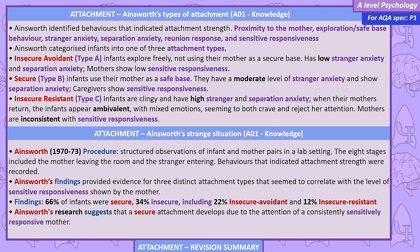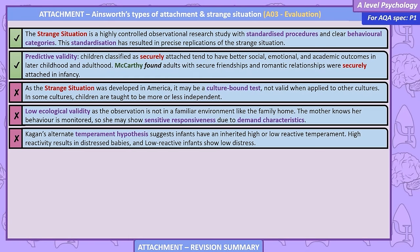Ainsworth's research suggests a secure attachment develops due to consistently sensitive responsive mothering. The strange situation is a highly controlled observational study with standardised procedures and clear behavioural categories, resulting in precise replications. Predictive validity: children classified as securely attached tend to have better social, emotional and academic outcomes in later life. McCarthy found adults with secure friendships and romantic relationships were securely attached in infancy. However, as the strange situation was developed in America, it may be a culture-bound test. The mother's behaviour may be affected by demand characteristics, and low ecological validity is a concern as the observation is not in a familiar environment.